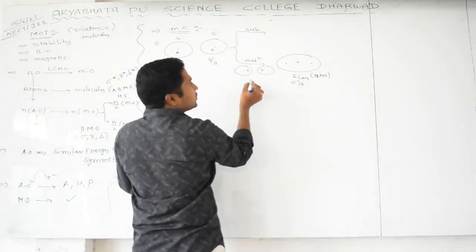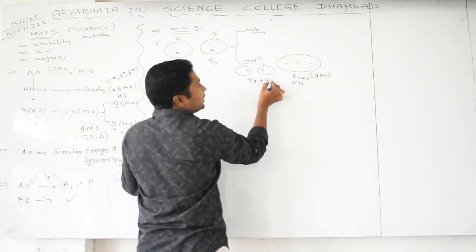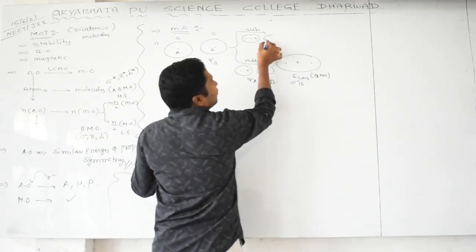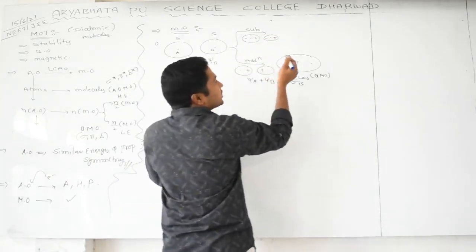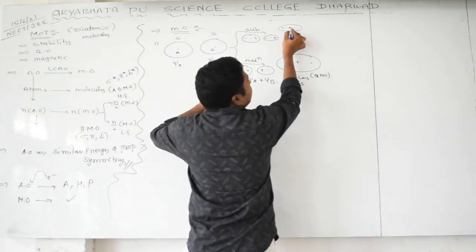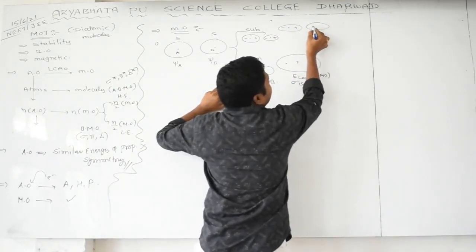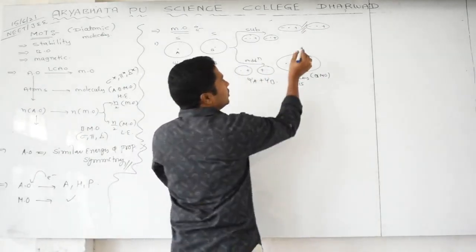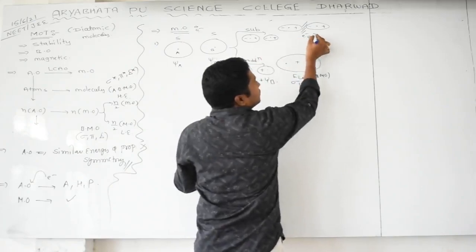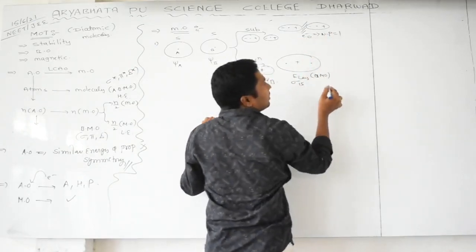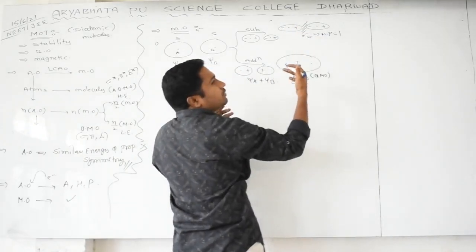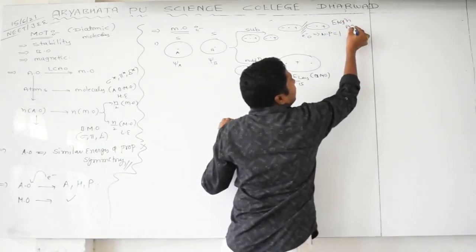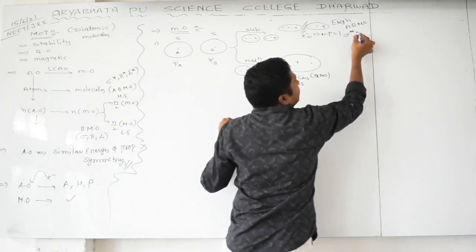For the anti-bonding MO (σ*1s), the subtraction gives a nodal plane between the two nuclei where electron finding probability is zero. There is no electron between the nuclei, so nuclear repulsion is high, energy is high — this is the anti-bonding molecular orbital σ*1s. One nodal plane is formed.